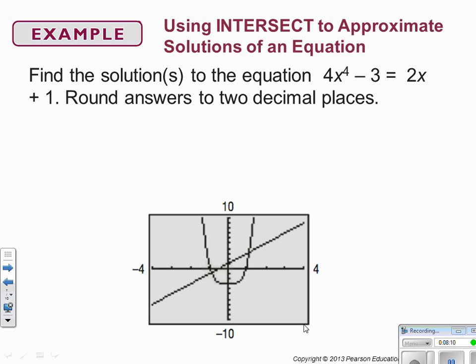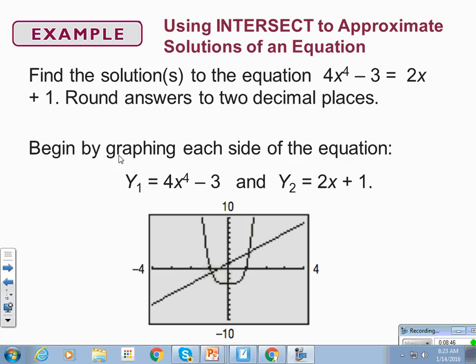So now we're going to find the solutions to the equation 4x to the 4th minus 3 equals 2x plus 1. And we're going to round our answers to two decimal places. So I want you to go ahead and write this equation down in your notes. If you get this process down, you will always be able to check your algebra on these chunky difficult problems. So this is a skill that will serve you well. What you want to do is you want to take the left-hand side of your equation and graph it on its own line, and the right-hand side of the equation and graph it on its own line. So 4x to the 4th minus 3 and 2x plus 1. So go ahead and do that in your graphing calculator.